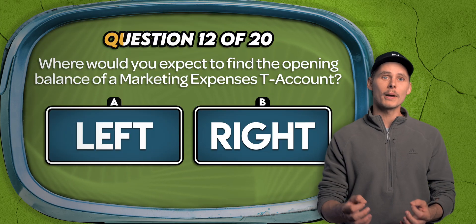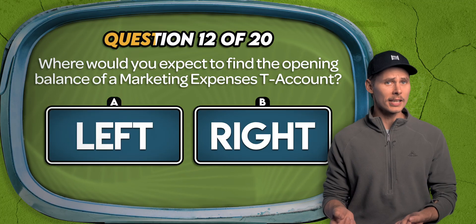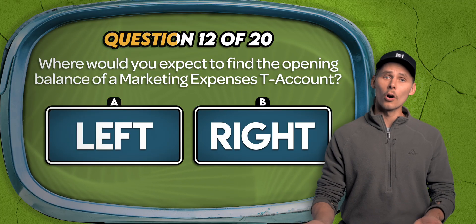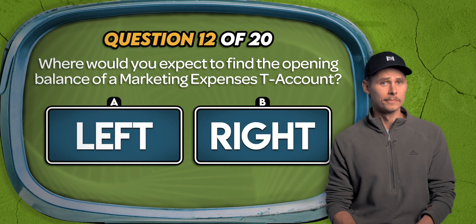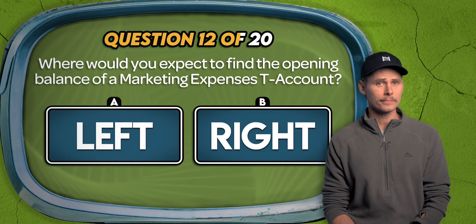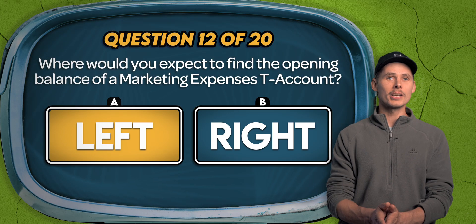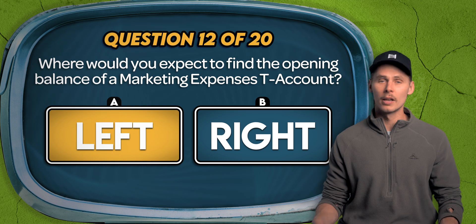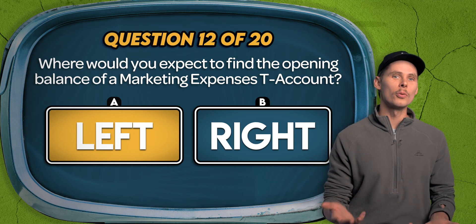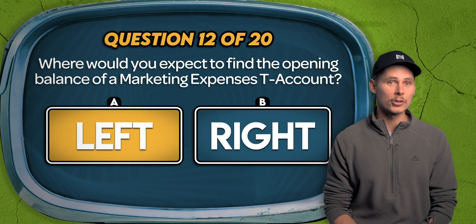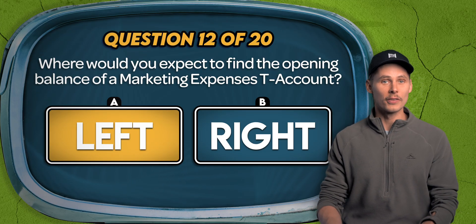Question 12. Where would you expect to find the opening balance of a marketing expenses T-account? On the left or on the right? A. Marketing expenses are a type of expense, so they're represented by the first E in DEALER. This means they're normal debit accounts, so their opening balance would be on the left or the debit side of the T-account.